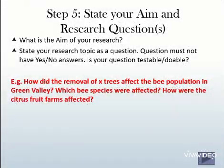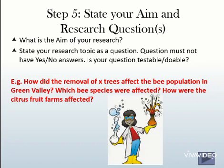The last step is to state your aim and research questions. It is advisable to state your research topic as a question that does not have a simple yes or no answer, because those answers do not guide you in coming up with methods or solutions to fully and comprehensively understand or solve your problem. In our example, we ask how the removal of X number of trees affected the bee population in Green Valley, which bee species were affected, and how the citrus fruit farms were affected.